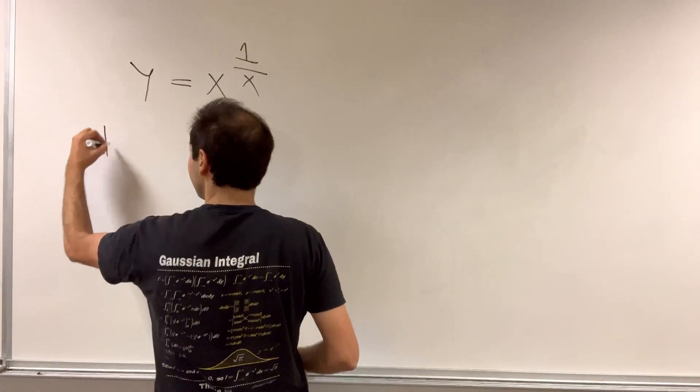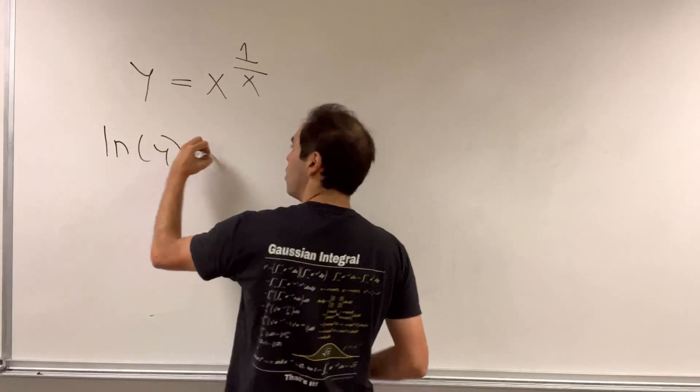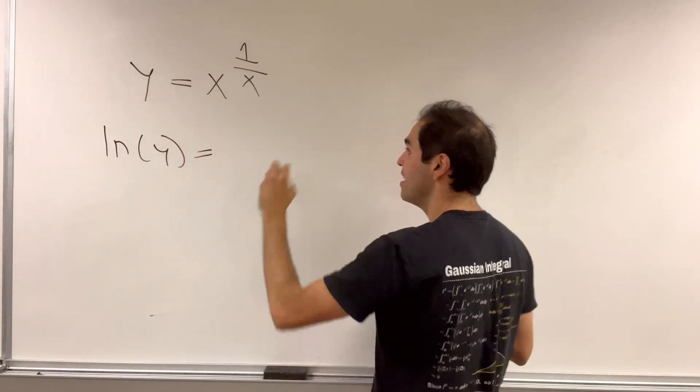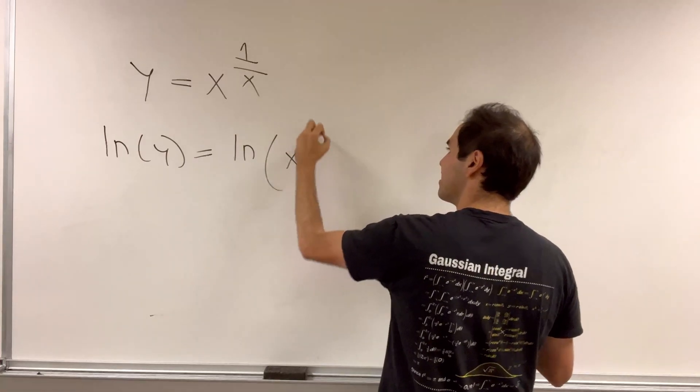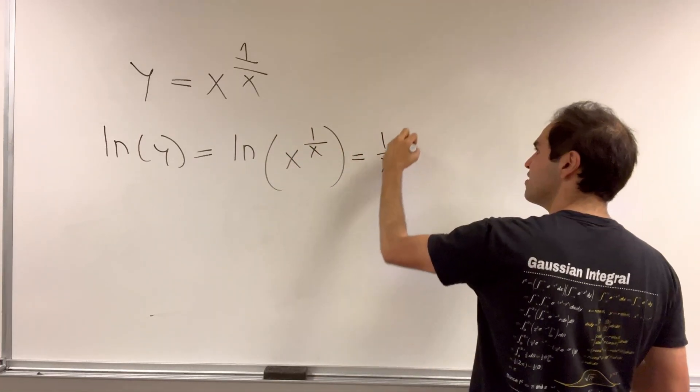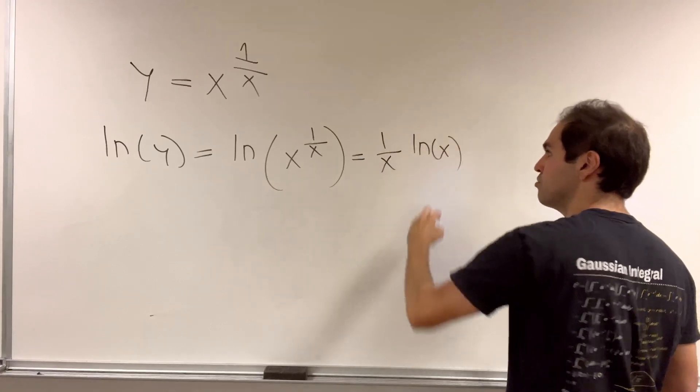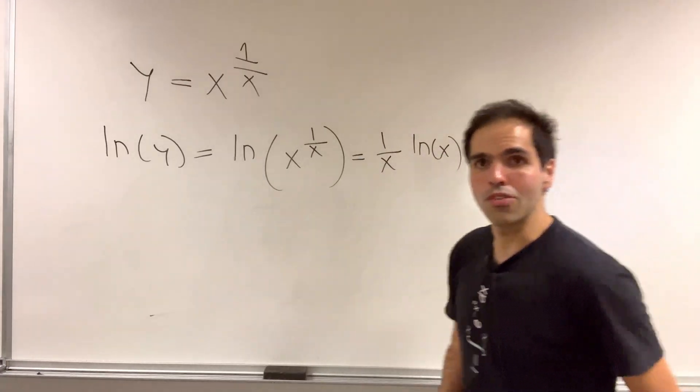For this, calculate the derivative using logarithmic differentiation. ln of y is ln of x to the 1 over x, which is 1 over x times ln of x, ln of x over x.